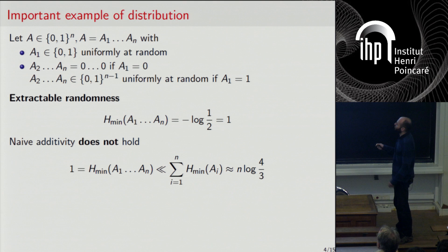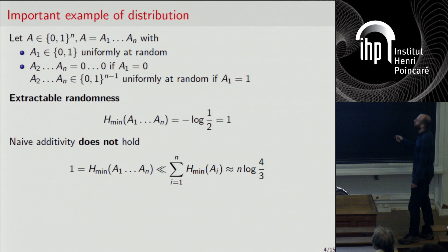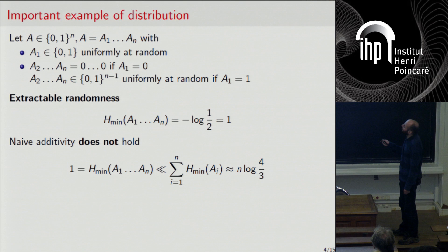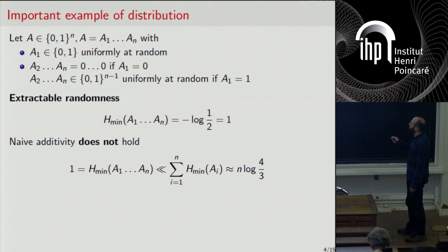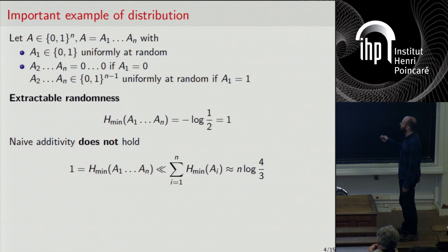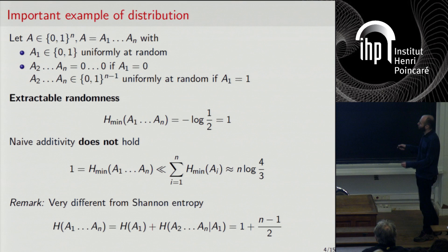If I look at individual bit A_i, it has a simple distribution: with probability three quarters it's zero, and with probability one quarter it's one. So it has a finite min-entropy, namely log(4/3). The sum of the min-entropies is linear in n — n times some positive constant. So the min-entropy of the whole can be much smaller than the sum of the individual entropies. This distribution is also an example where the min-entropy and the Shannon entropy are very different: the Shannon entropy is linear in n, whereas the min-entropy is a constant equal to one.